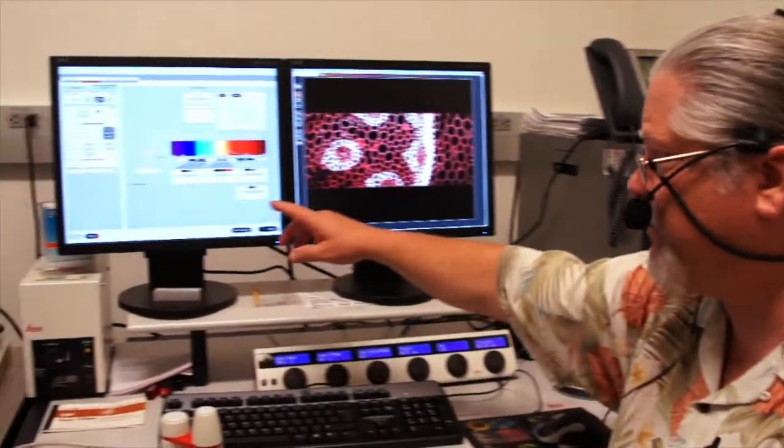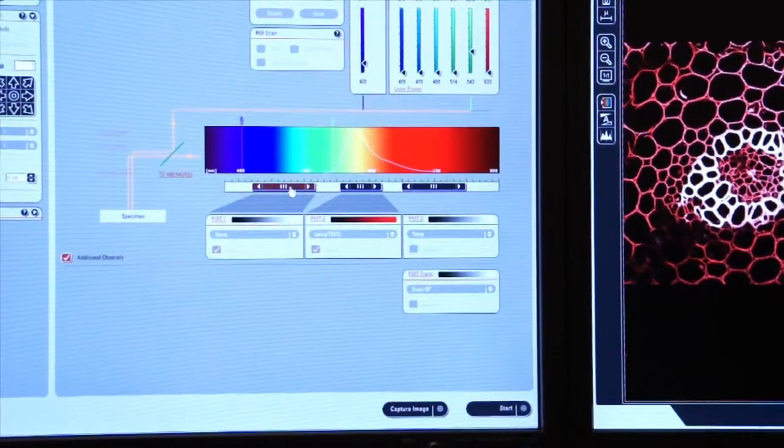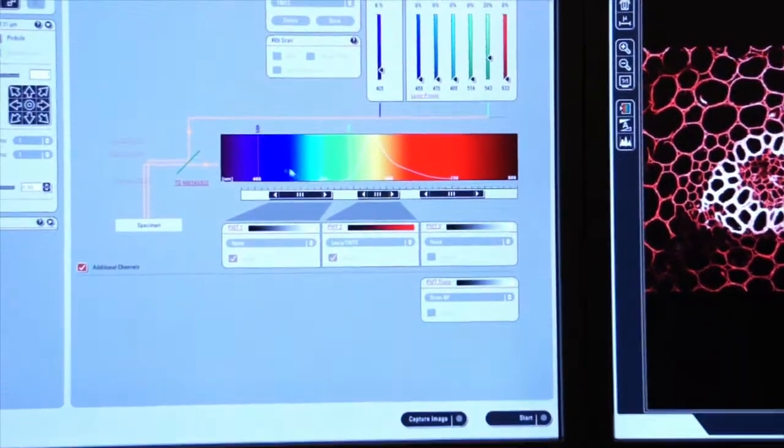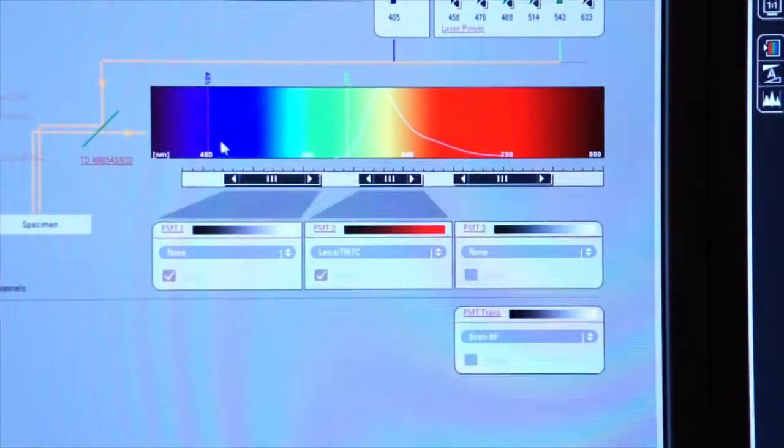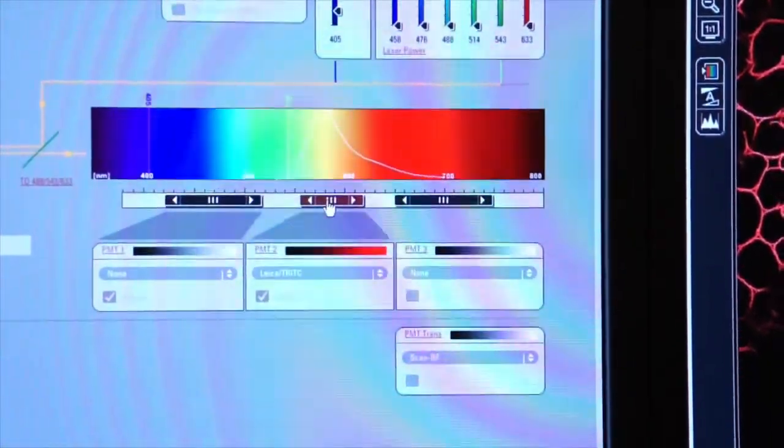That's the power of these sliding photomultiplier tubes. Looking at the left screen, we have the photomultiplier tube stretched out in an area of the spectrum that's being excited by this 405 line, and then the TRITC PMT is looking here.